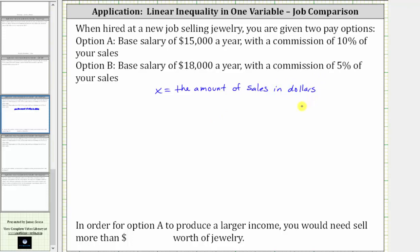Now we need to write an expression for the income using option A, as well as option B. For option A, there's a base salary of $15,000 a year, which gives us 15,000, and then plus a 10% commission of your sales, which in our case would be 10% of x. To find 10% of x, we convert the percent to a decimal and multiply. 10% is equal to 0.1 as a decimal, and therefore 10% of x is equal to 0.1x, which means for option A, the annual salary is 15,000 plus 0.1x.